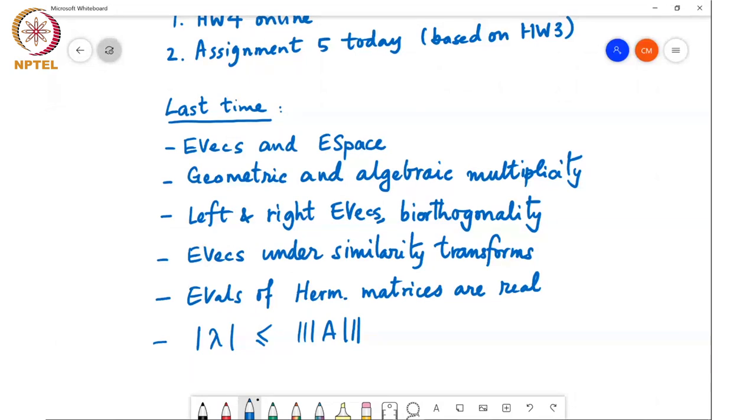We looked at the concept of geometric and algebraic multiplicity of an eigenvalue. We also defined left and right eigenvectors and the principle of bi-orthogonality, namely that if you take two distinct eigenvalues